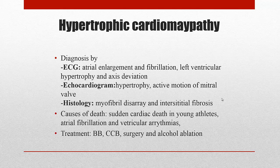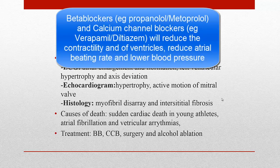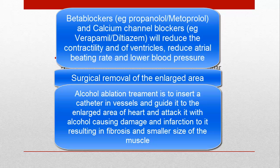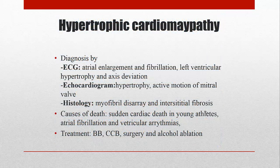The cause of death in hypertrophic cardiomyopathy can be sudden cardiac death in young athletes — a basketball player, a football player. It can also be due to atrial fibrillation precipitating ventricular tachyarrhythmias, thromboembolism, or ventricular arrhythmias. Treatment involves giving beta blockers or calcium channel blockers. Other important treatments include surgical removal of the enlarged area, and there is also alcohol ablation — where a catheter is inserted into the vessels and guided back to the heart, then alcohol is applied to the hypertrophied area, causing infarction of that area followed by fibrosis, which contracts and decreases the size of the hypertrophied region.